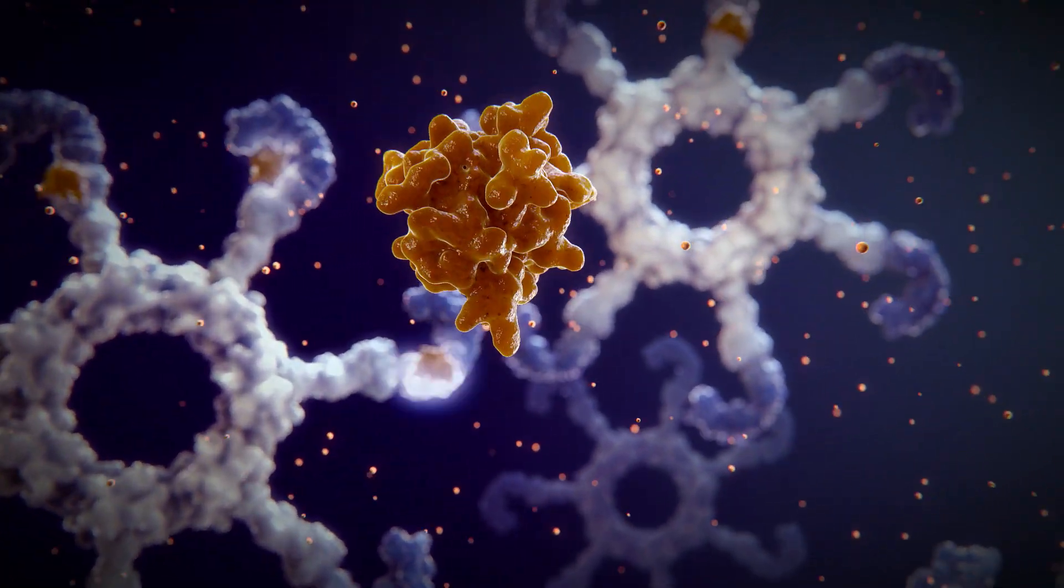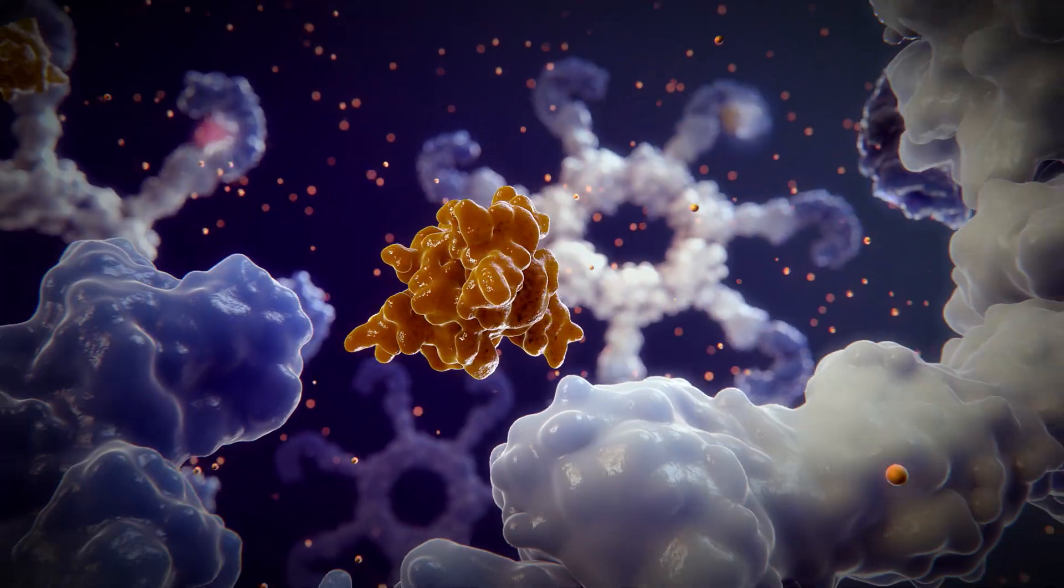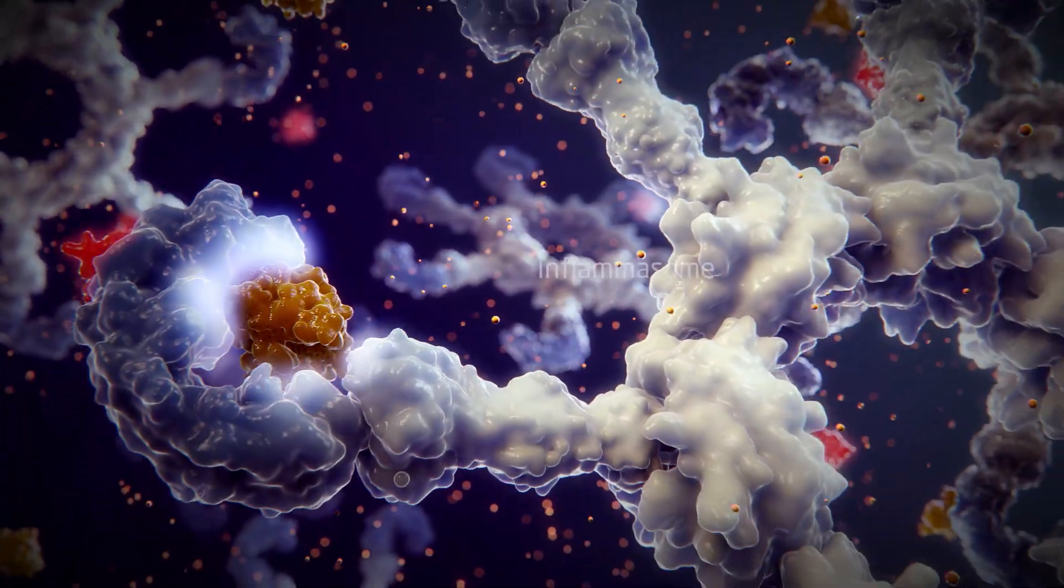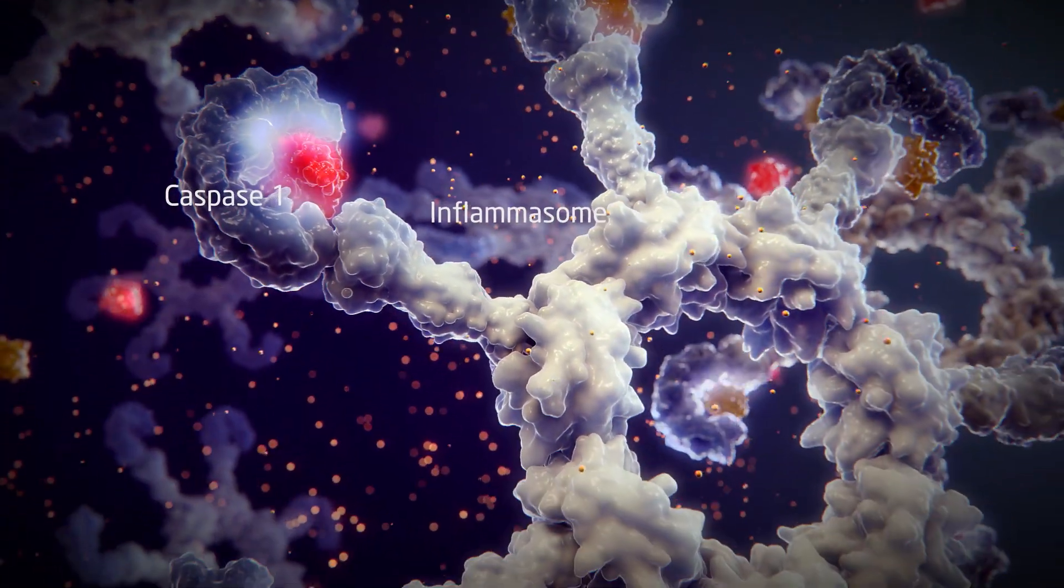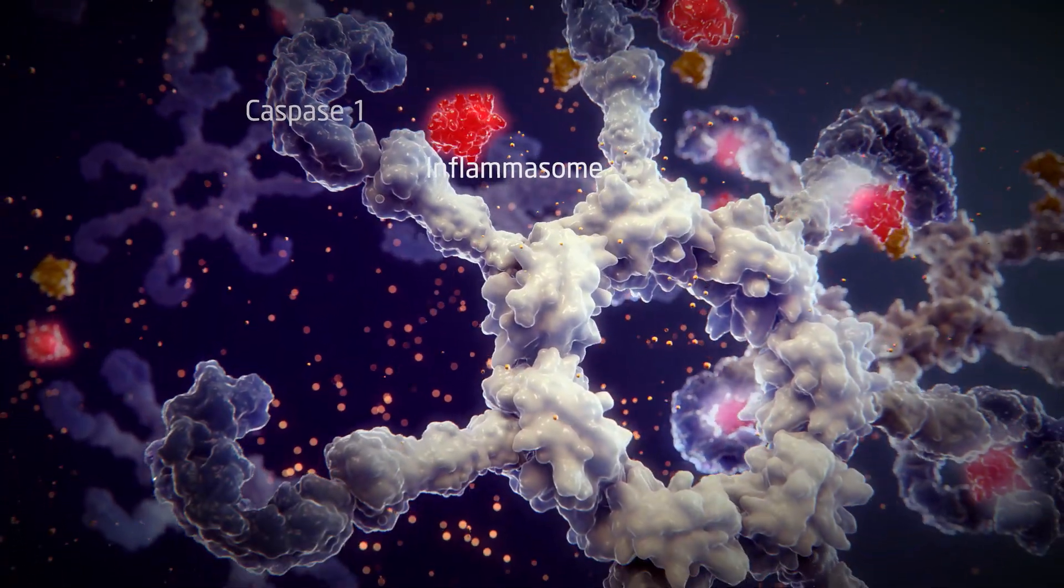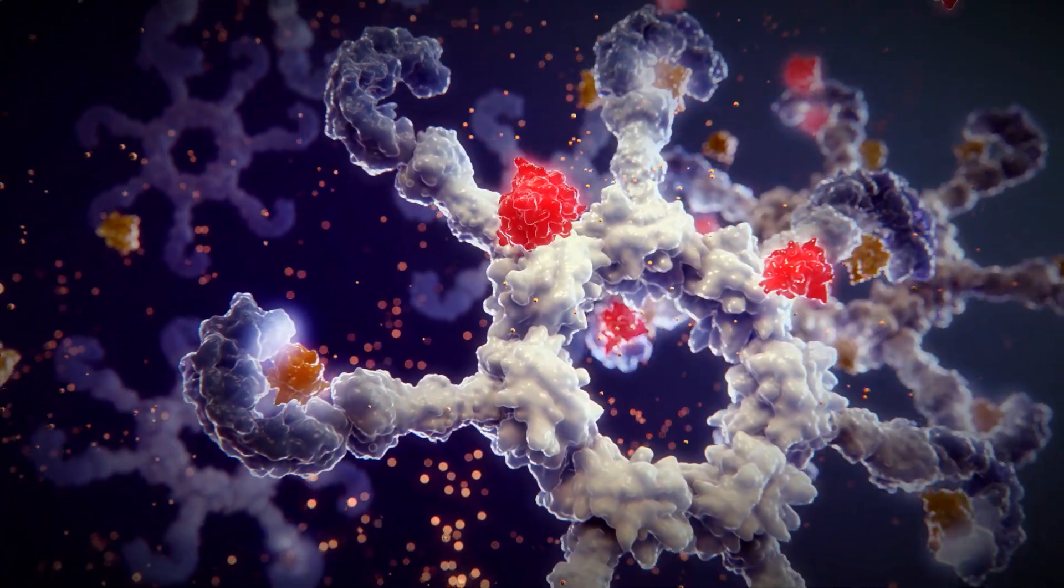Interleukin-1-beta is produced first as a precursor protein, which is then cleaved by caspase-1, a protein that forms part of a complex known as the inflammasome to form its active form.